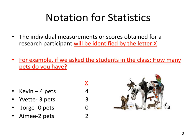So for our X values, we have four, which signifies the four pets that Kevin has; three, which signifies the three pets that Yvette has; zero, which signifies that Jorge has no pets; and two, which signifies that Amy has two pets. Our notation for a variable is going to be X, and under X will be numeric values that represent how much of that particular variable each individual participant has.